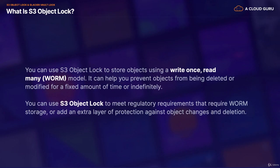So what is S3 Object Lock? You can use S3 Object Lock to store objects using a Write Once Read Many model, or a WORM model, and it can help you prevent objects from being deleted or modified for a fixed amount of time or indefinitely. You can use S3 Object Lock to meet your regulatory requirements that require WORM storage, or you can use it to add an extra layer of protection against object changes and deletion.